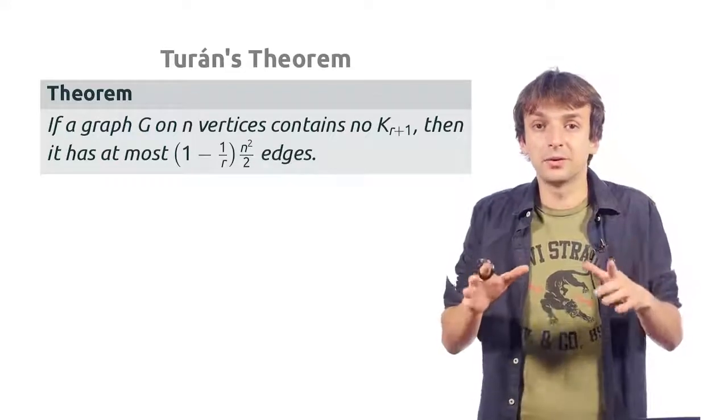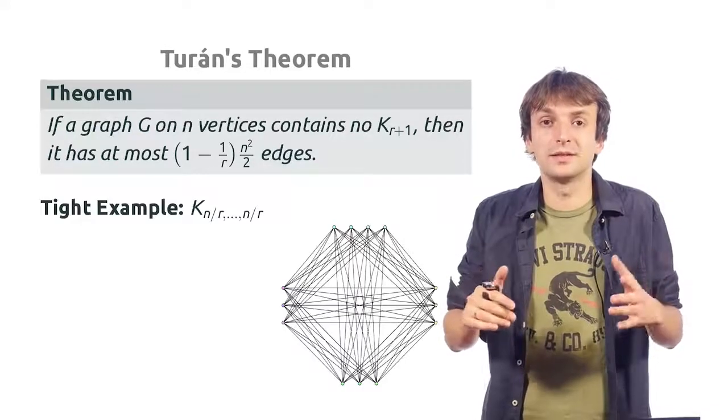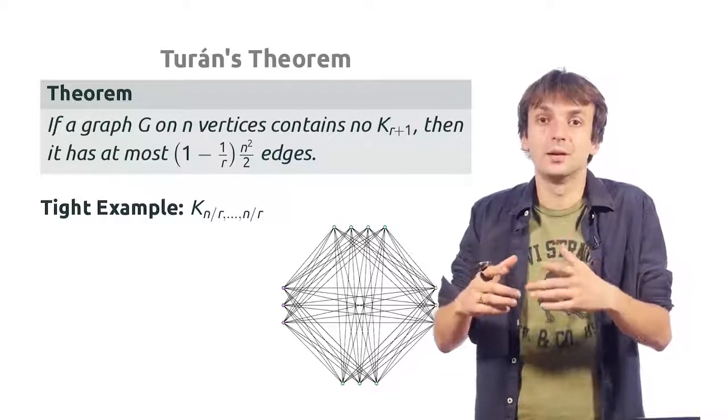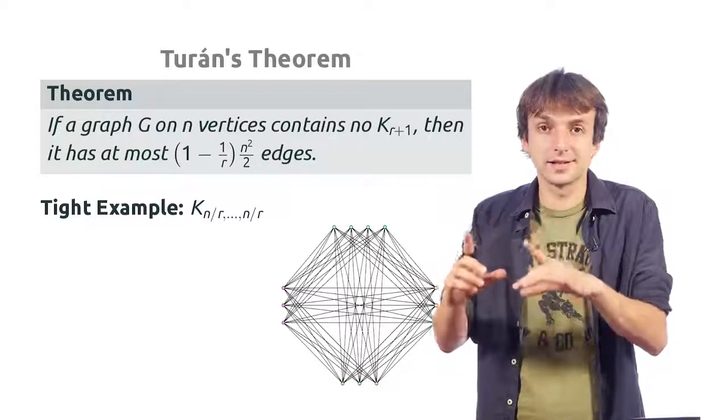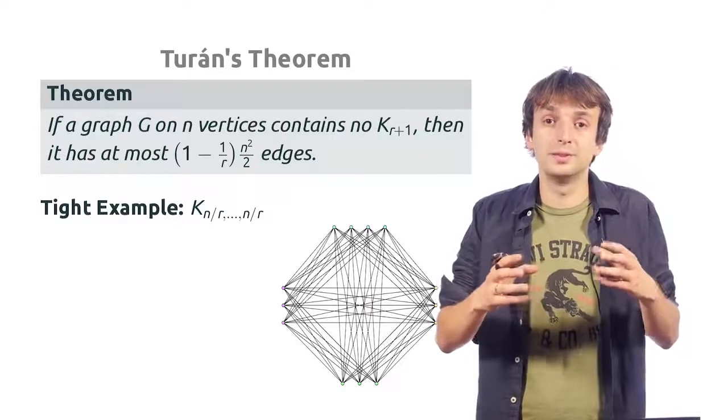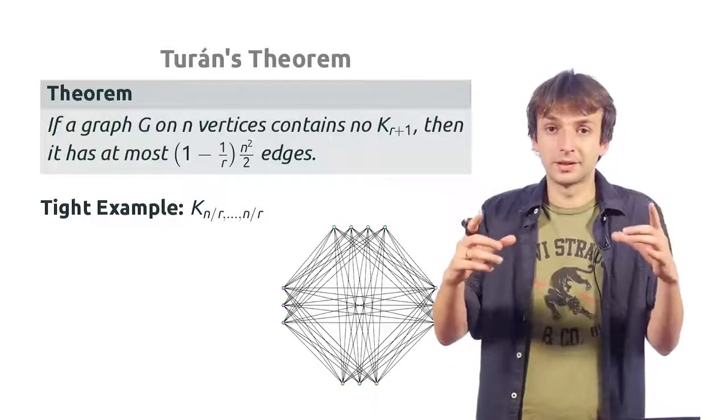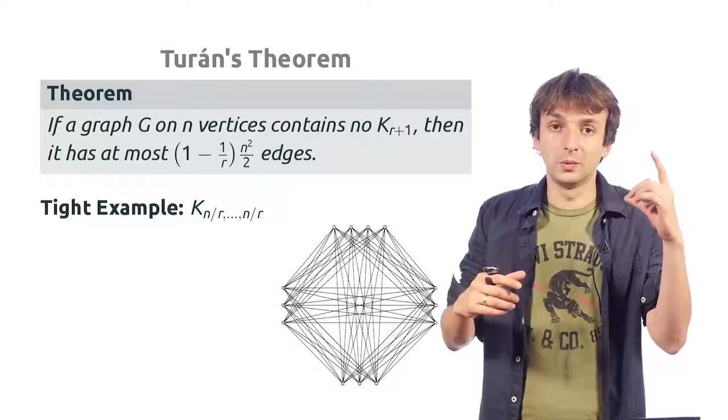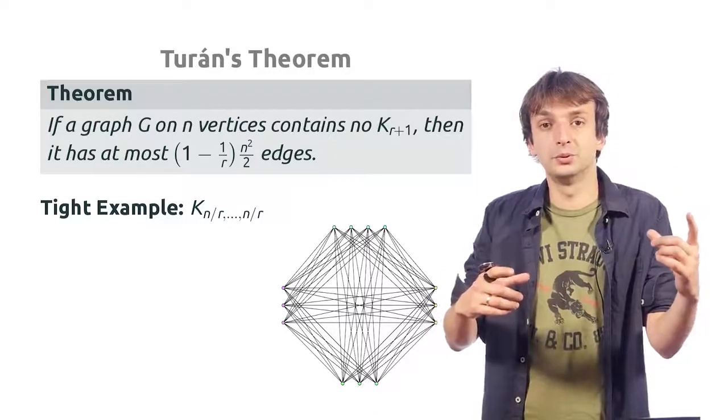And in fact, both theorems are tight, which means that there are graphs which have exactly this number of edges. For Mantel's theorem, this would be a complete bipartite graph where the left part has n over 2 vertices, the right part has n over 2 vertices,